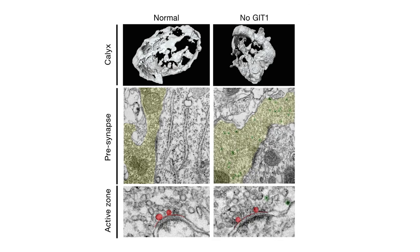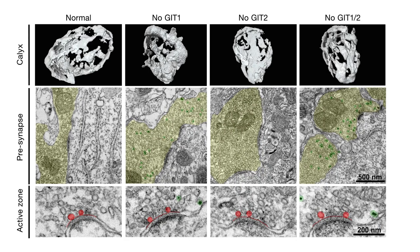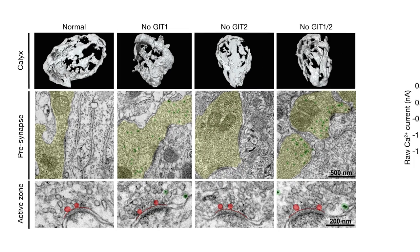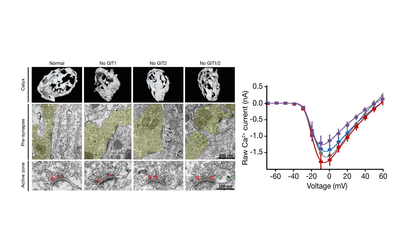Regardless of whether GIT1, GIT2, or both were deleted, the structure of the calyx and pre-synapse as well as pre-synaptic calcium signaling remained unaffected, which is important because these factors could potentially influence neurotransmitter release.